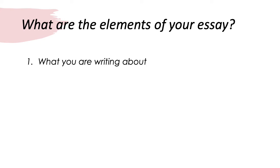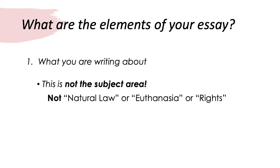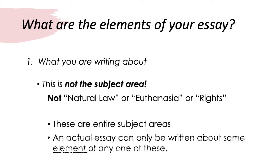What are you writing about? When people are asked, they often say something like 'I'm writing about natural law theory' or 'I'm writing about euthanasia.' Those are subject areas, but you're not writing about your subject area. You're not writing about natural law, euthanasia, or rights as a whole because these are entire subject areas. A fifteen-to-eighteen-hundred-word essay cannot be about all of natural law or everything to do with euthanasia. It just doesn't work — it's too much. Your essay has to be about some specific element of one of these.